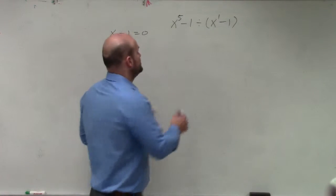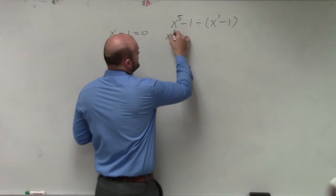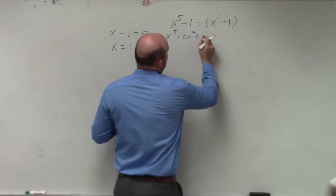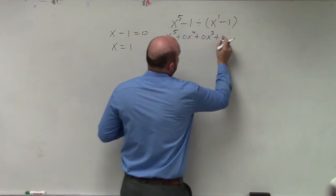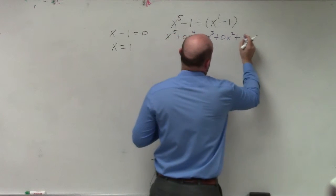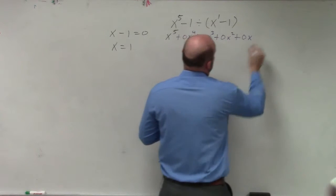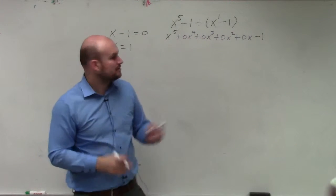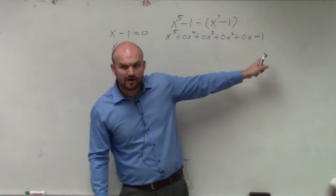So what you could do is rewrite this as x^5 + 0x^4 + 0x^3 + 0x^2 + 0x - 1. Because what's 0 times all of these? Zero.